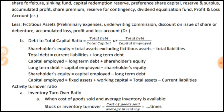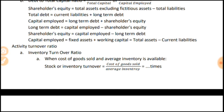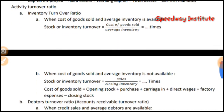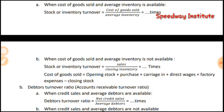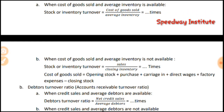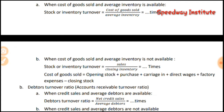Activity ratios relate to running operations. For inventory turnover ratio: when cost of goods sold and average inventory are available, use cost of goods sold divided by average inventory. When cost of goods sold is not given, it equals opening stock plus purchases plus carriage inward plus direct wages plus factory expenses minus closing stock. Average inventory equals opening inventory plus closing inventory divided by two.